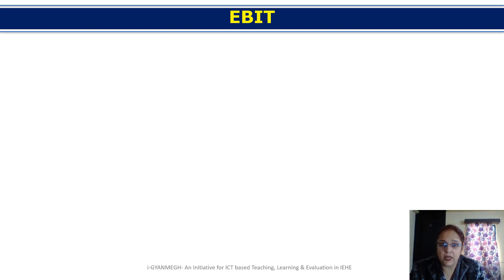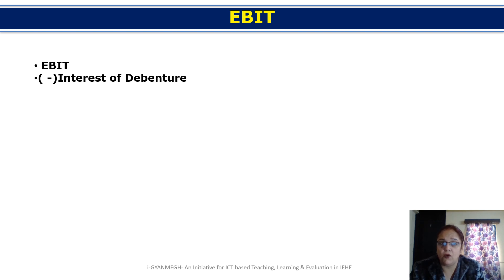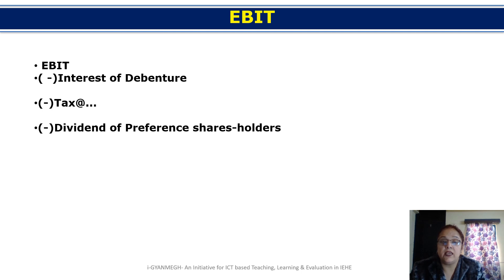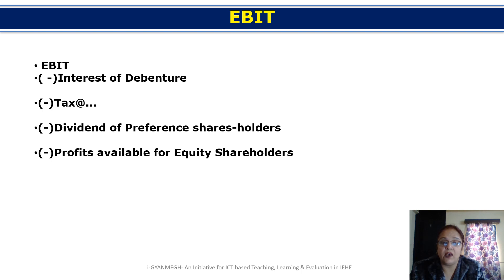I will now explain earnings before interest and tax (EBIT). In profit distribution, interest and tax are always deducted first. The interest for debenture holders — say 10% or 5% — is deducted from profit, and after that tax is paid. The remaining profit is distributed to preference shareholders first, and then whatever remains is available for equity shareholders. This determines the earnings per share (EPS).